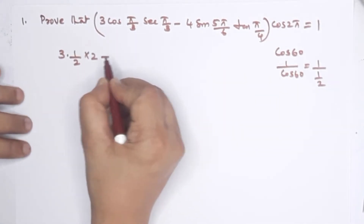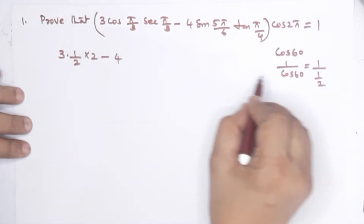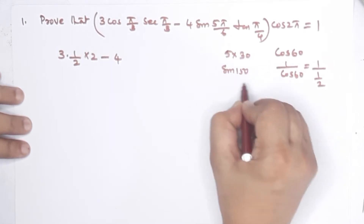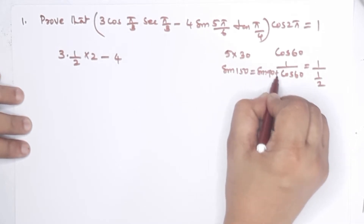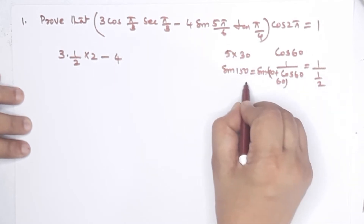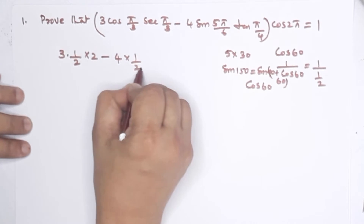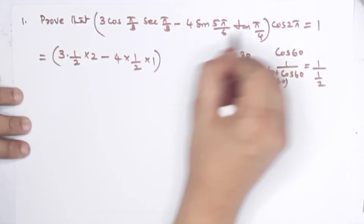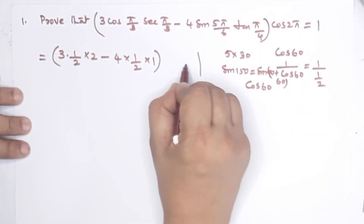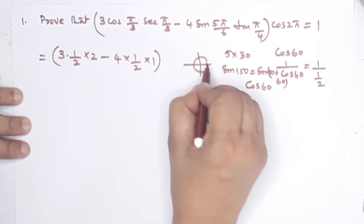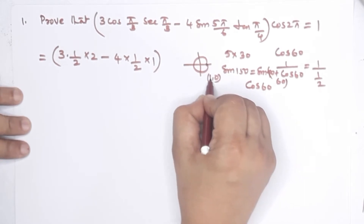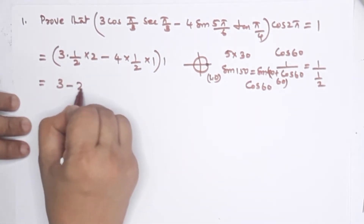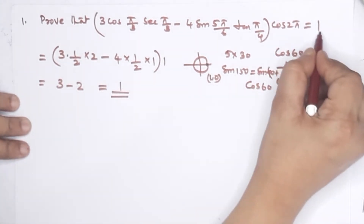So that means 2. Minus 4sin(5π/6): 5π/6 means 5×180/6 = 150°, which is sin90°+60°, so sin150 = cos60 = 1/2. tan(π/4) equals 1. cos(2π) equals 1, using the unit circle where cos0 = cos2π = 1. So the result is 3 equals 3, which proves it equals 1.